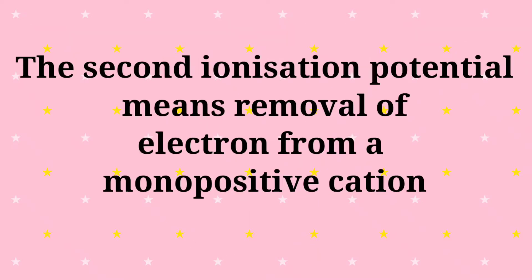Second ionization potential means removal of an electron from a monopositive cation. From the monopositive cation we have to remove the second electron, meaning one electron is already removed.